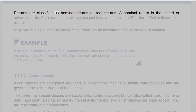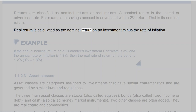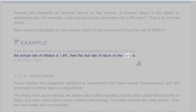Returns are classified as nominal returns or real returns. A nominal return is the stated or advertised rate — for example, a savings account advertised with a 2% return has a 2% nominal return. Real return is calculated as the nominal return on an investment minus the rate of inflation. For example, if the annual nominal return on a GIC is 3% and the annual rate of inflation is 1.8%, then the real rate of return is 1.2%.